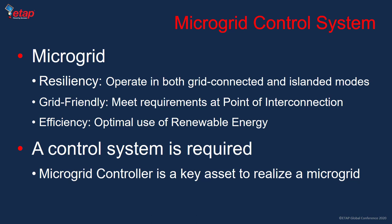Another key attribute of the microgrid is that it makes combinations of distributed energy resources and loads more grid-friendly. There are typically several requirements at the point of interconnection to the main grid, and the microgrid control system meets those requirements. For example, a microgrid may not be permitted to export power to the grid at certain locations, so the controller uses energy storage to absorb excess renewable power. There are also requirements for active and reactive power support during disturbances.